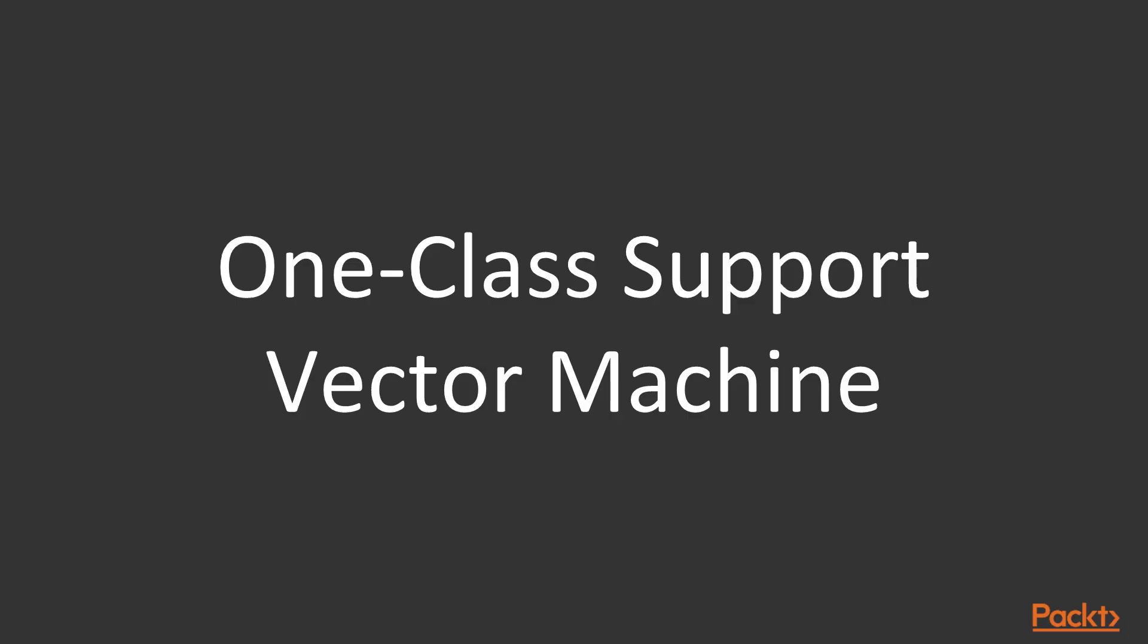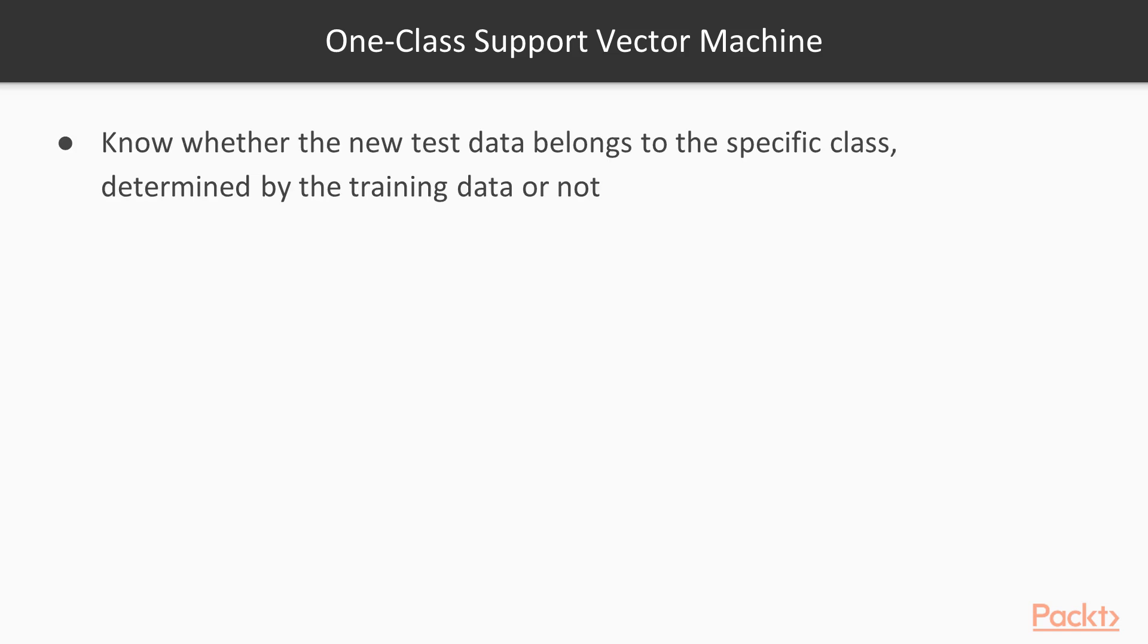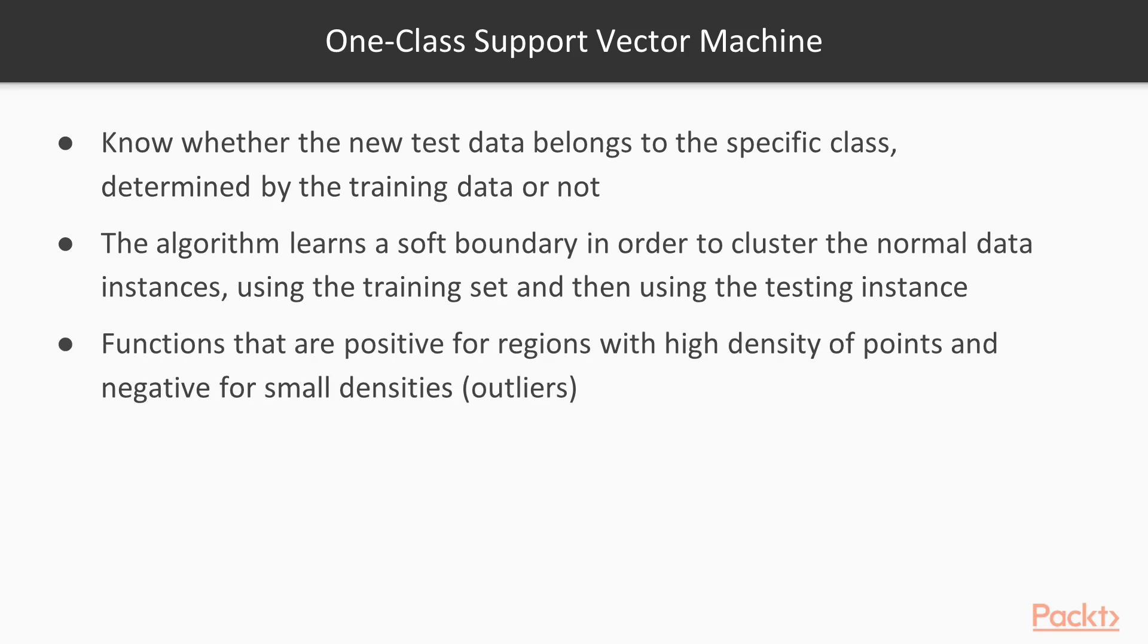The last method we are going to talk about is the one-class support vector machine. In order to go through its details, we must summarize what support vector machines are, which is far beyond the goal of this course. So for more information about this method, or any other anomaly detection method, we encourage you to investigate through hundreds of sources online. In one-class SVM, we would like to know whether the new test data belongs to the specific class determined by the training data or not. The algorithm learns a soft boundary in order to cluster the normal data instances using the training set and then using the testing instances. It tunes itself to identify the abnormalities that fall outside the learned region. In other words, we will be looking for functions that are positive for regions with high density of points, and negative for small densities, which will be considered as outliers. Finding such a function is equal to finding a separating hyperplane.